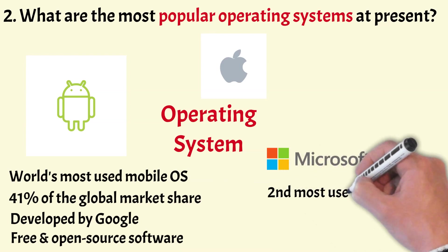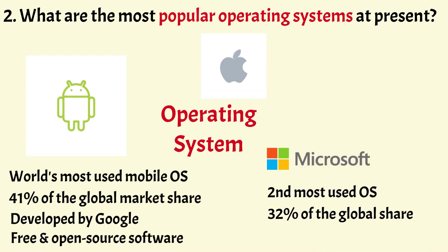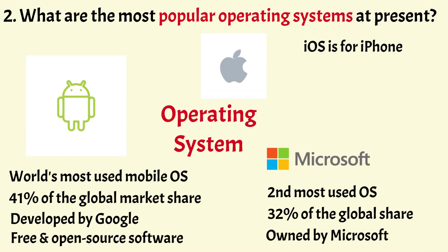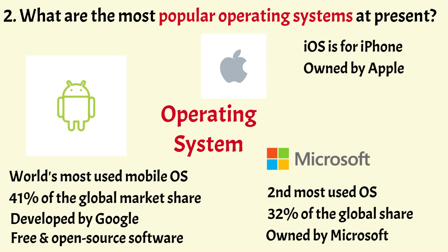Windows is the second most used operating system which accounts for 32% of global market share. Windows is a proprietary operating system owned by Microsoft and currently dominates the personal computers market including desktops and laptops. iOS is the operating system of the iPhone, a proprietary mobile operating system developed and owned by Apple, accounting for over 16% of global market share.